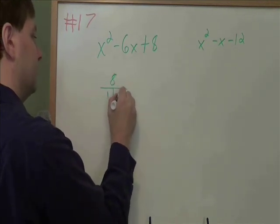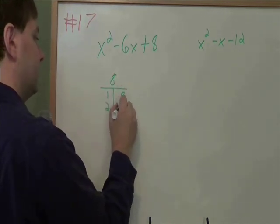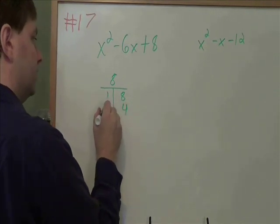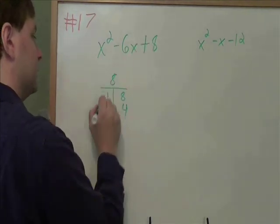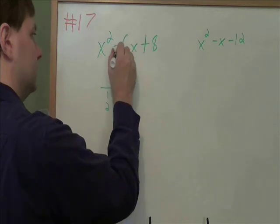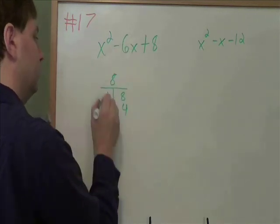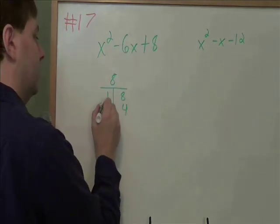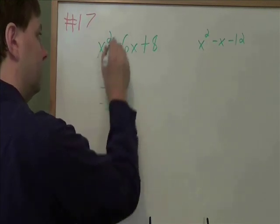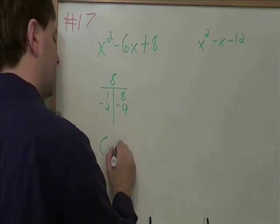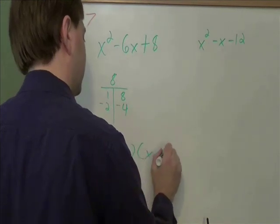Now which of these would add up to give us 6? To get negative 6, we need the 2 and the 4. And we need to make them both negative. So this factors to be x minus 2, x minus 4.